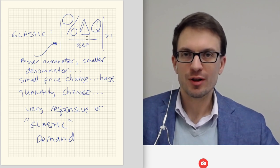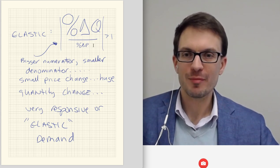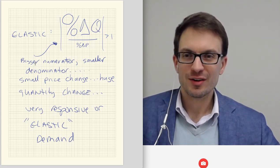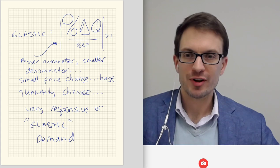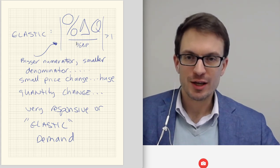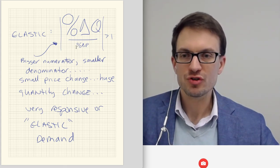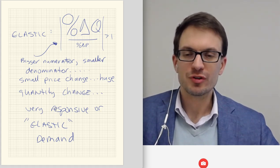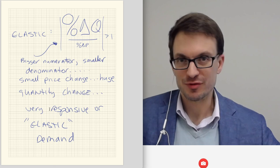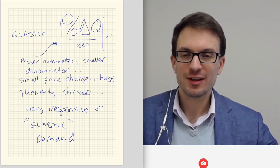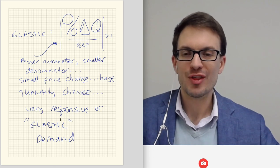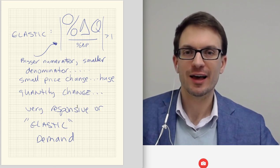What do we know about fractions? If the numerator is larger than the denominator, the overall value is greater than one. With a bigger numerator and smaller denominator, we have a proportionately smaller price change and a proportionately larger quantity change. This tells us demand is very responsive to that small change in price. We call very responsive demand elastic demand.